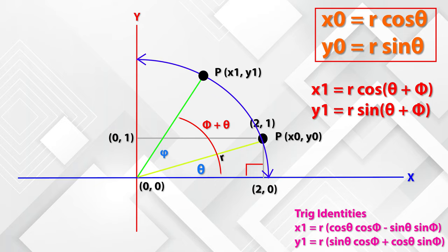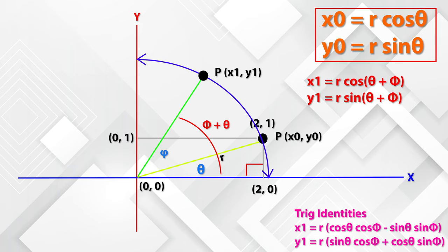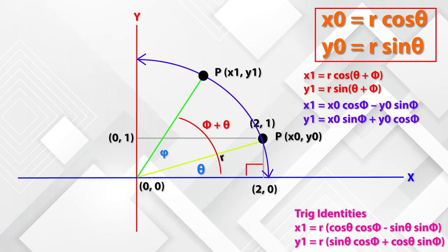Using the trig identities, the simplified values will be x1 is equal to R in a bracket cos theta cos phi minus sin theta sin phi. Y1 is equal to R sin theta cos phi plus cos theta sin phi. From the previous equation of x0 and y0, we know x0 is equal to R cos theta, y0 is equal to R sin theta. That means, the new expression would be x1 is equal to x0 cos phi minus y0 sin phi. Y1 is equal to y0 cos phi plus x0 sin phi.